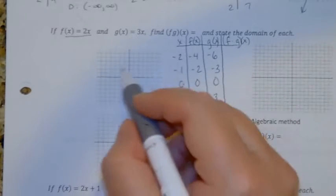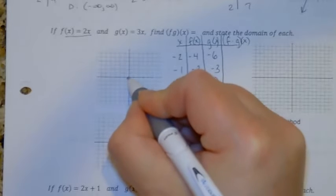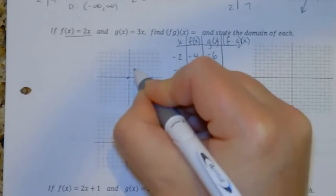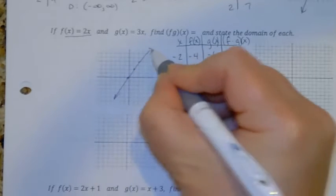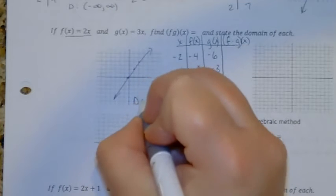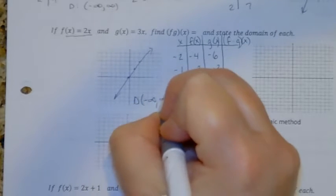So if I graphed this first one, it begins at 0, and it goes up to over 1. So the graph kind of looks something like this. Notice the domain for this one is negative infinity to infinity.